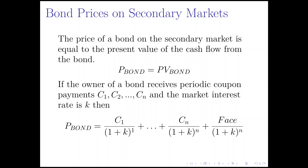How is the market going to value it? Well, it depends on how the market values its cash flow — all the coupon payments and the face value paid at the very end. More explicitly, if the owner of the bond is receiving periodic coupon payments C1, C2, through CN, and the market interest rate is K, then the price of the bond is the first coupon payment discounted one year, plus all coupon payments up to CN discounted N times, plus the face value discounted N times as well.